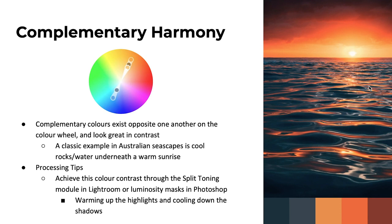The third colour harmony is the complementary harmony. These exist when we have colours opposite one another on the colour wheel. A classic example in landscape photography is a seascape sunrise with blue water and blue rocks under an orange-red sky — these complementary cooler blues and warmer oranges look great in contrast with one another. A simple way to emphasise and achieve this harmony is through the split toning module in Lightroom or luminosity masks in Photoshop, warming up just the brighter highlights while cooling down the shadows. Another example would be a nice green forest complemented with some bright red flowers — as long as they're opposite on the colour wheel, they align to this complementary harmony.